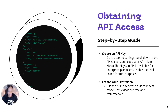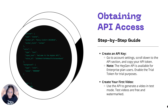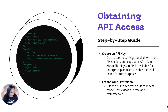Next up, obtaining API access. First, create an API key: go to your account settings, scroll down to the API section, and copy your API token. Or you can go to Google, type in HeyGen API, and that'll bring up the docs page explaining exactly what the HeyGen API code is.